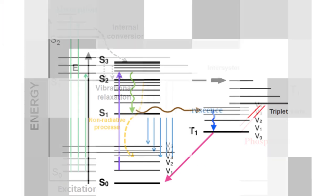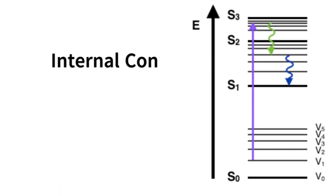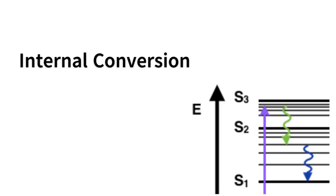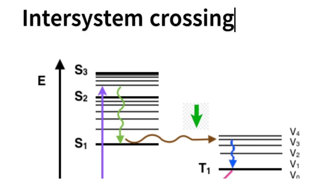Non-radiative transitions, represented by rippling arrows, occur between molecular states without the absorption or emission of photons. Internal conversion involves non-radiative transitions between electronic states of the same spin multiplicity, such as singlet-to-singlet transitions. Inter-system crossing, on the other hand, entails transitions between electronic states with different spin multiplicities, like triplet-to-singlet.